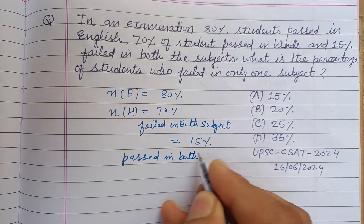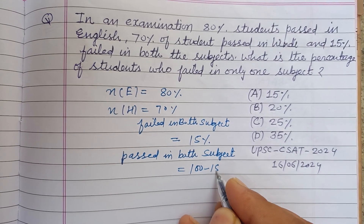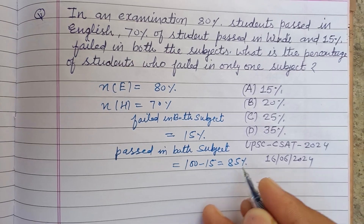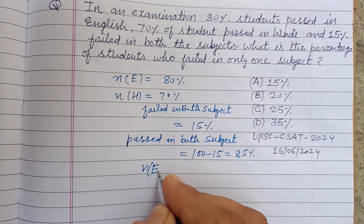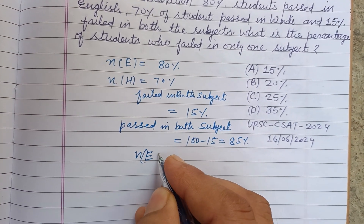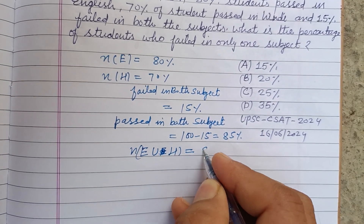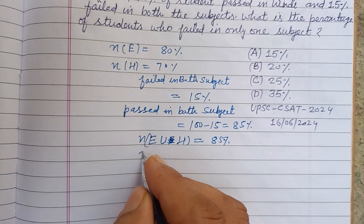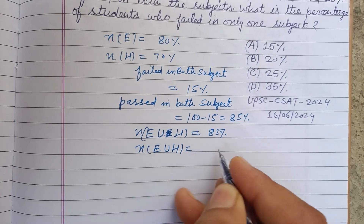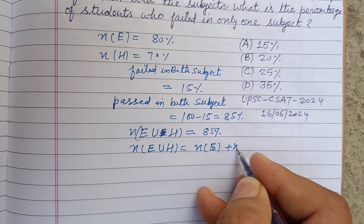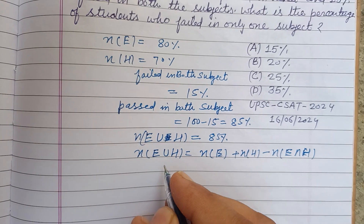Since 15% failed in both subjects, the percentage who passed in at least one subject is 100 minus 15, which equals 85%. So N(E ∪ H) is given as 85%. Using the inclusion-exclusion formula: N(E ∪ H) equals N(E) plus N(H) minus N(E ∩ H).